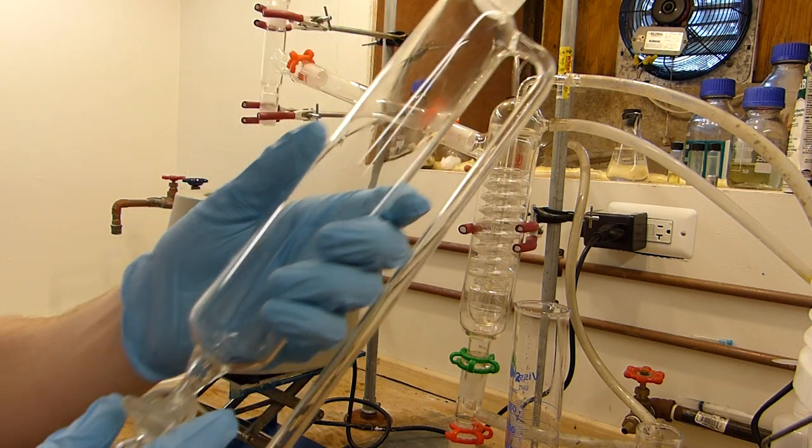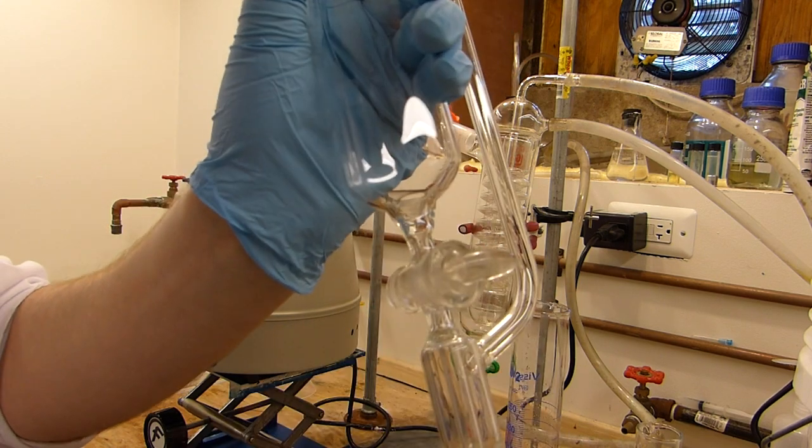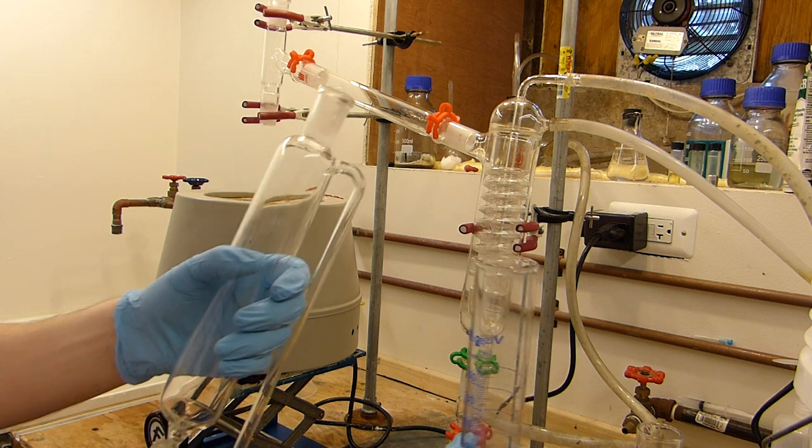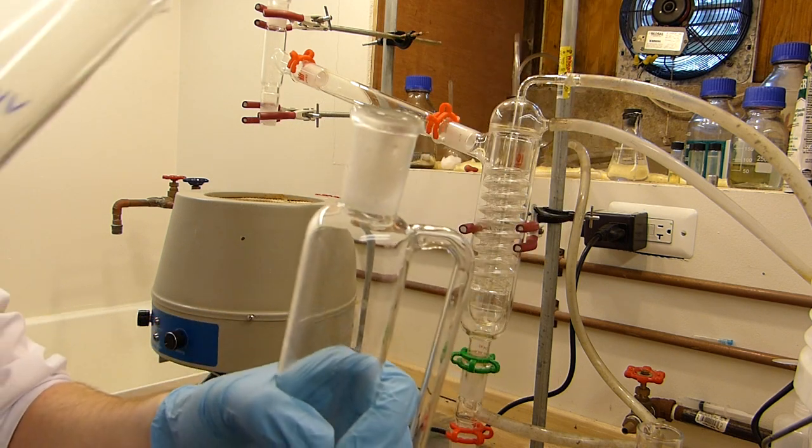In the meantime, first ensuring that the stop cock is closed, we can load 114 milliliters of 29% hydrogen peroxide into the addition funnel.